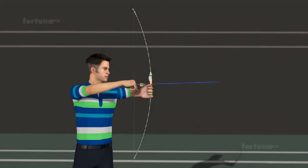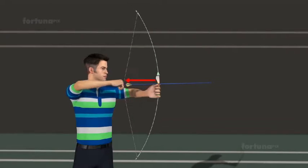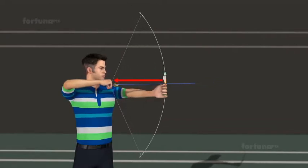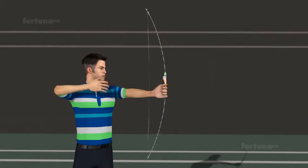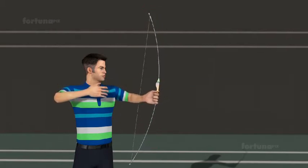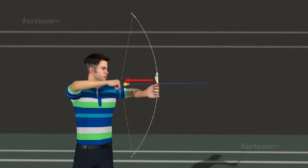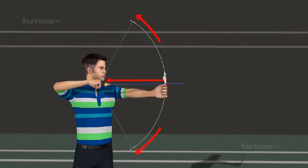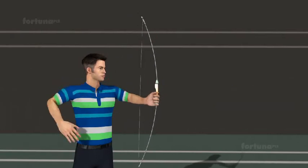Let's look at a bow and arrow. When the string of the bow is pulled, the bow, which is made of a flexible material, will bend and store energy. Once the string is released, the energy will also be released, launching the arrow. The further back the string is pulled, the more the bow will bend, allowing the arrow to travel even further once the string is released.